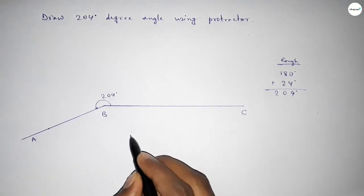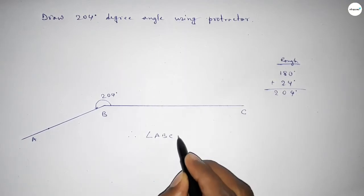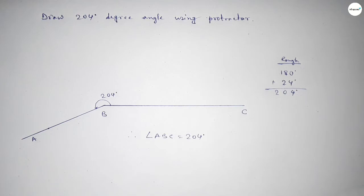Therefore angle ABC equals 204 degree angle. That's all, thanks for watching. Please share it with your friends.